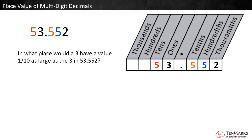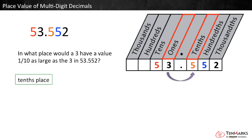Last question: in what place would a three have a value one tenth as large as the three in fifty-three and five-hundred-fifty-two thousandths? The three in this number is in the ones place. One tenth as large means the same as ten times smaller. A digit's value is ten times smaller for each place it shifts to the right. So a three in the tenths place is worth one tenth as much as the three in the ones place.